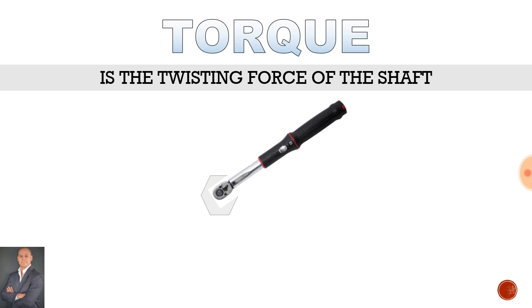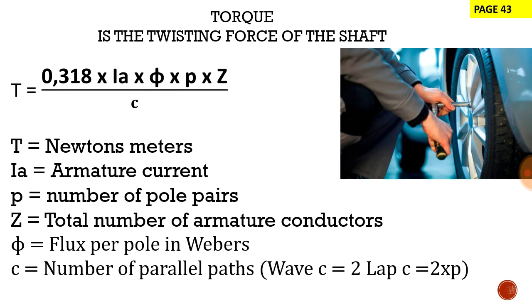Now if we look at the formula that's provided to us on the formula sheet and we break it down and look at each function inside the formula, 0.318 is derived from 1 over pi. T represents the Newton meters and torque.